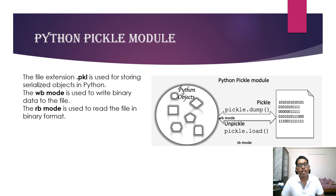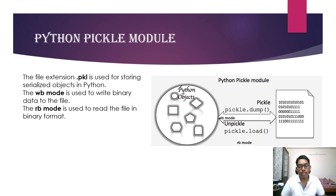Next is the Python Pickle module. As we can see in the image, Python objects are stored into binary form. The file extension .pkl is used to store serializable objects in Python. The 'wb' mode is used to write binary data into the file, and the 'rb' mode is used to read the file in binary format.